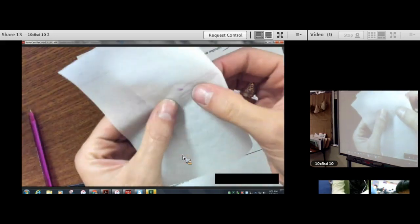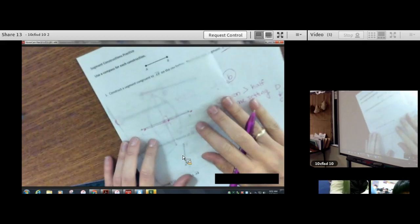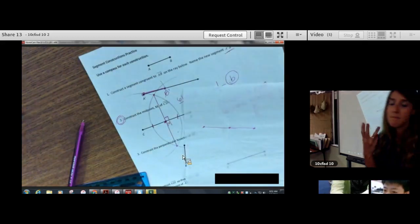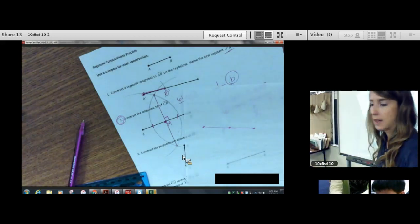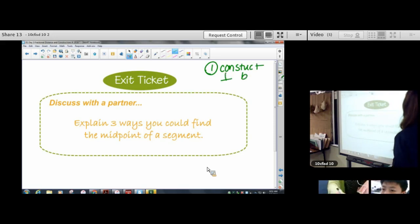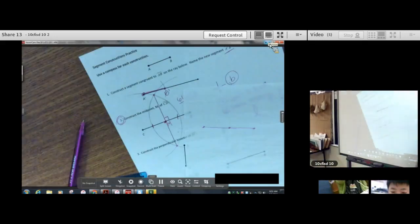Last step: take a straight edge, remember not a ruler, and connect this point where the arcs met to this point where the arcs met. You have constructed a perpendicular bisector. Where that segment hits your segment at the intersection, that is the exact middle, that is the midpoint of your segment. We just talked about three ways to find the midpoint of a segment. One way is to construct a perpendicular bisector. Another way is to measure with a ruler and divide by 2. And then another way is to use patty paper, tracing paper, and crease that tracing paper.